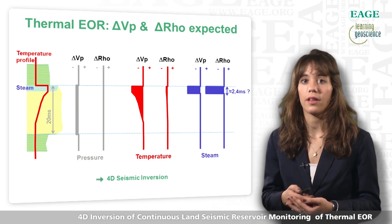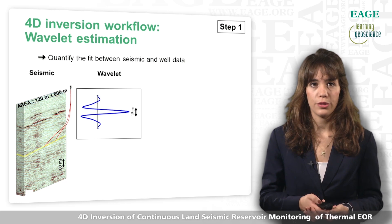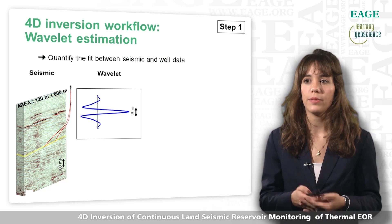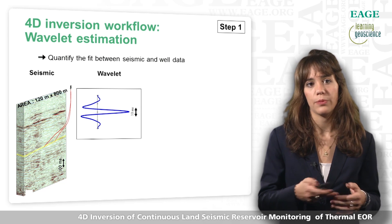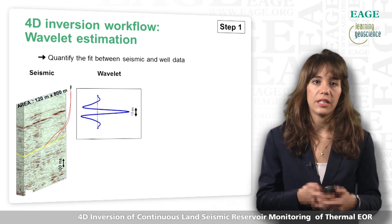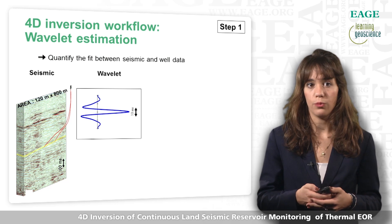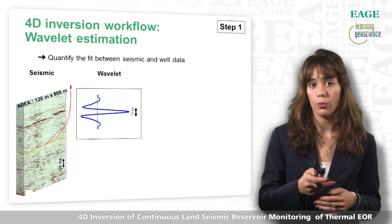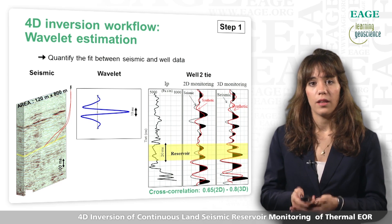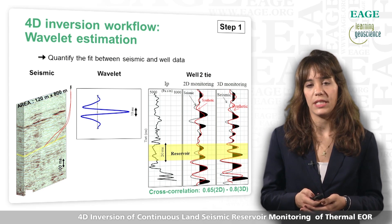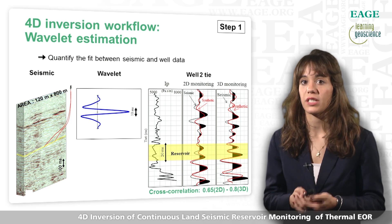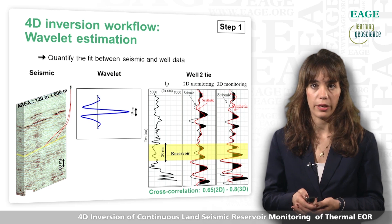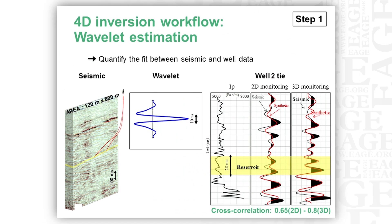I will present the workflow in three steps and then the result. The first step is wavelet estimation to quantify the fit between the seismic and the well data. The seismic is perpendicular to the deviated observational well, and therefore the estimation of this wavelet was only possible on a small window at the intersection between the seismic and the well data — about 100 ms. The cross-correlation between the two is about 0.65 for the 2D monitoring and 0.8 for the 3D monitoring, thanks to 3D processing tools. This value is reasonable considering we correlate the deviated observational well to a perpendicular 2D line or 3D strip monitored area.